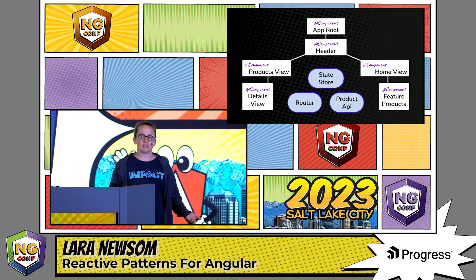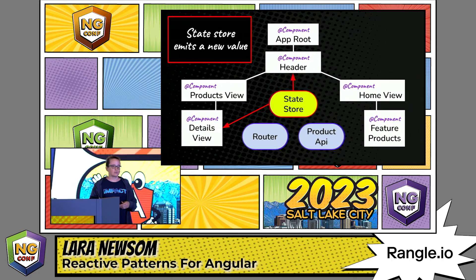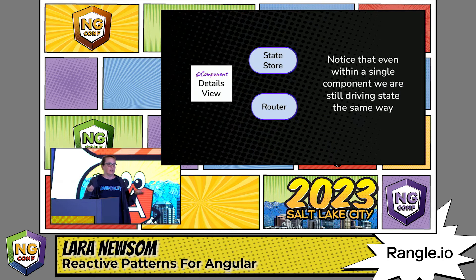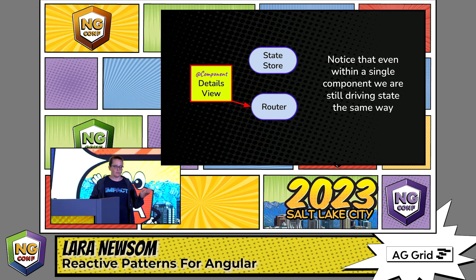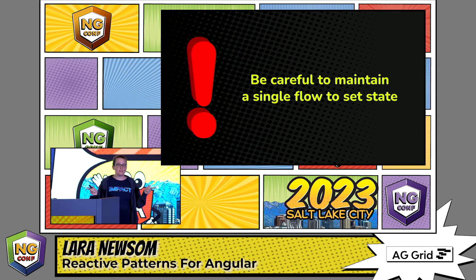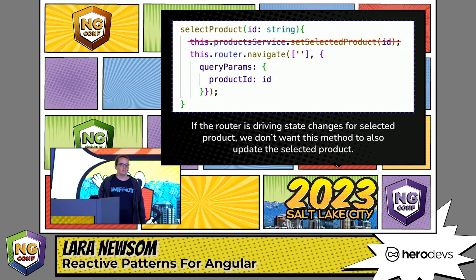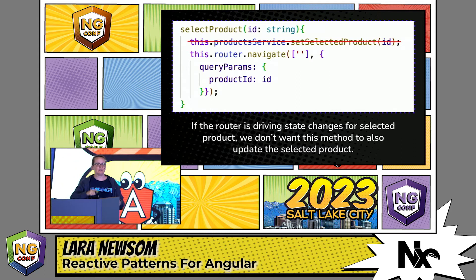In our components, users select a product, it goes to the router, the state store reads data from the router, and then passes that data to the components that need it. Even within a single component we drive state the same way: the detail view says something happened, the router store says 'I know what to do,' passes it to the state store, and the state store hands it down to the end consumer. We want to maintain that single flow of state — don't try to drive state with the router while also manually setting it. You'll add a complication you'll have to untangle later.